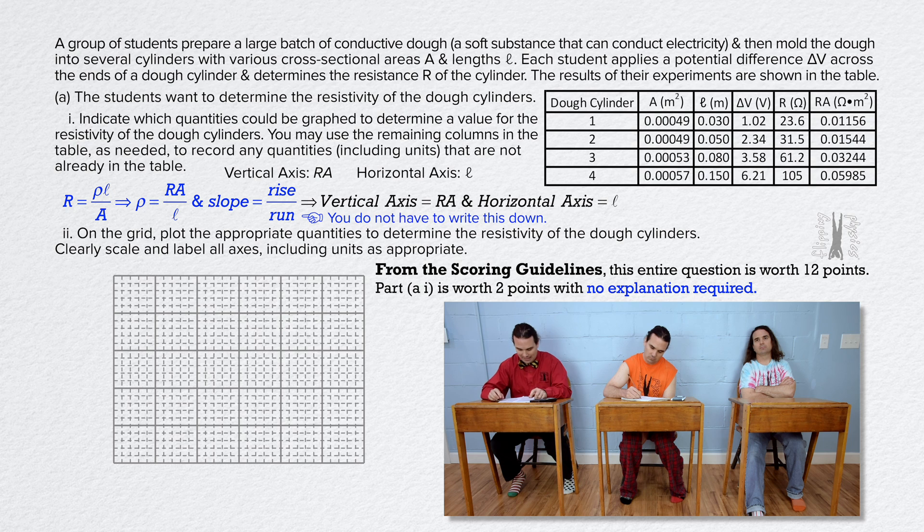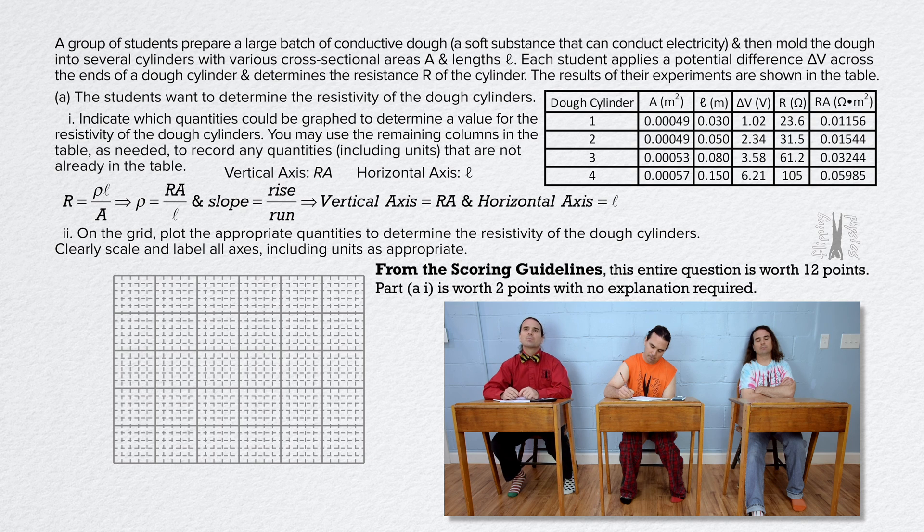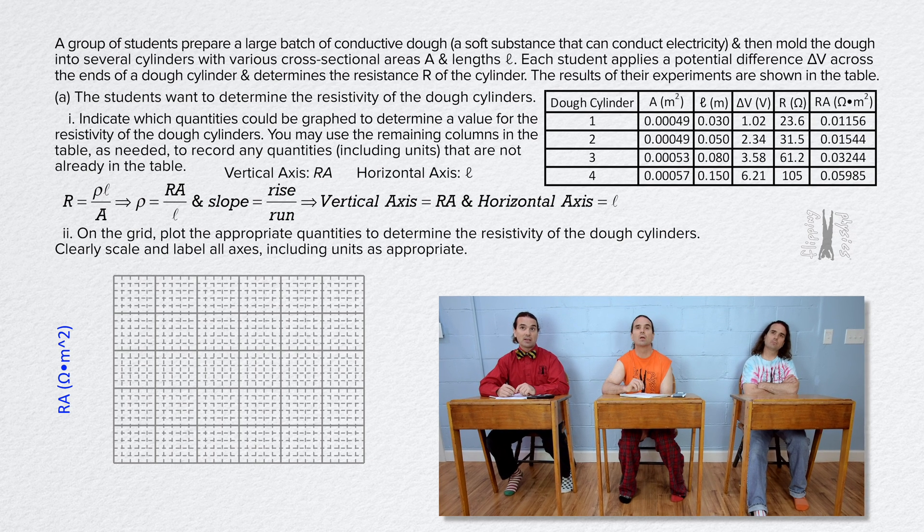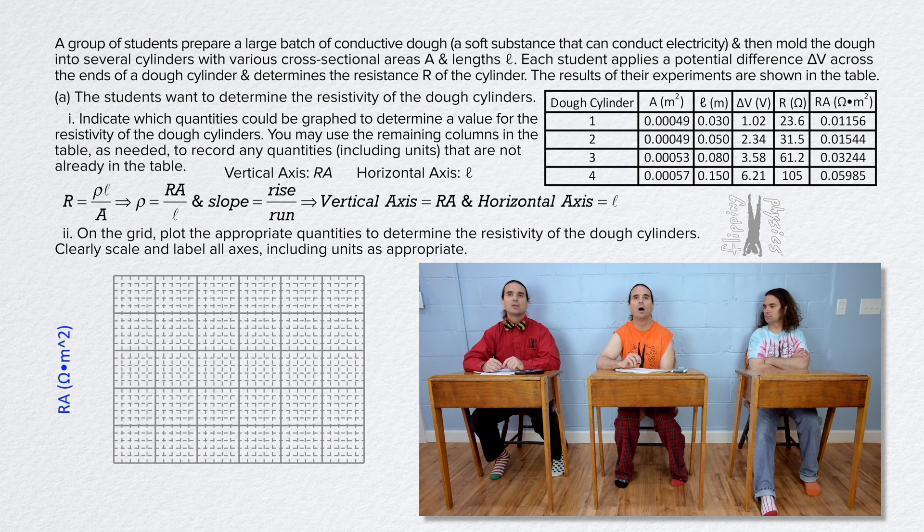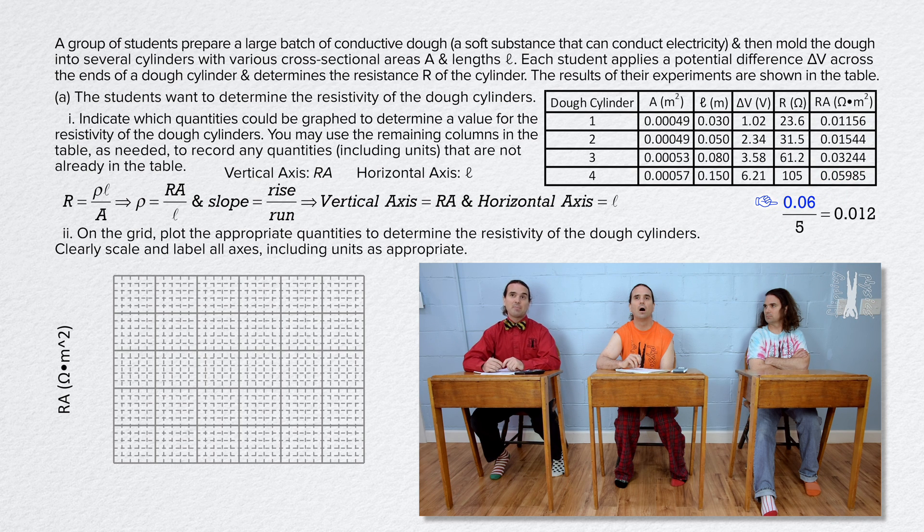Certainly. Part AII. On the grid, plot the appropriate quantities to determine the resistivity of the dough cylinders. Clearly scale and label all axes, including units as appropriate. On the vertical axis we have resistance times cross sectional area in ohms times meters squared. The numbers there go up to roughly 0.06. In order to make that fit, well, 0.06 divided by 5 equals 0.012, so let's go in increments of 0.025.